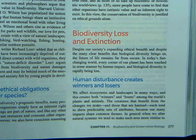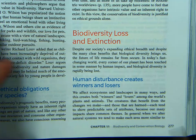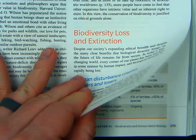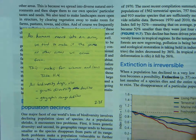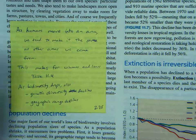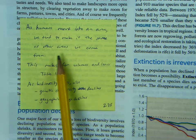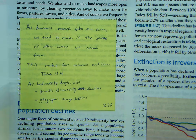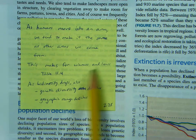All right, here we go — 11.3 starting page 277, talking about biodiversity loss and extinction. If you flip to 278, as humans move into an area we tend to make it the same as other areas we come from. That's a bad thing because not every area in the world is the same, so we can't modify one area to what we're used to. This creates basically winners and losers, which is up in section 11.4.